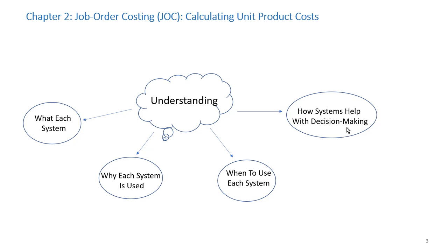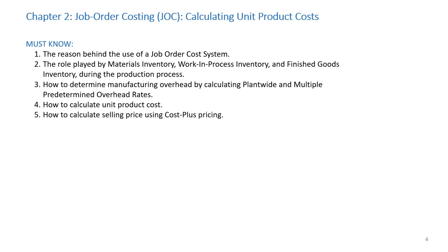The focus for Chapters 2 and 3 is on Job Order Costing, or JOC. Upon completion of Chapter 2, you must know: one, the reason behind the use of job order cost systems; two, the role played by materials inventory, work-in-process inventory, and finished goods inventory during the production process; three, how to determine manufacturing overhead by calculating plant-wide and multiple overhead rates; four, how to calculate unit product cost; and five, how to calculate selling price using cost plus pricing.